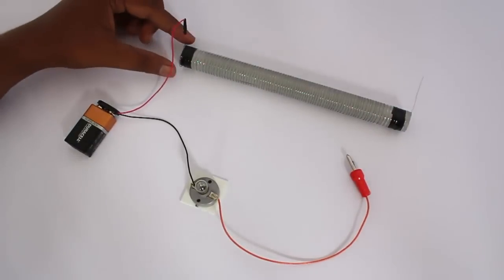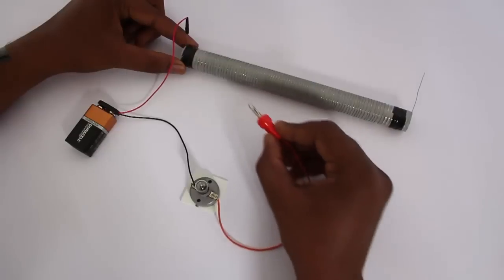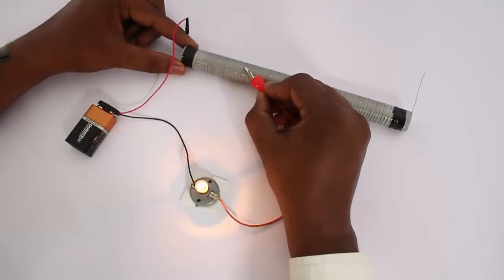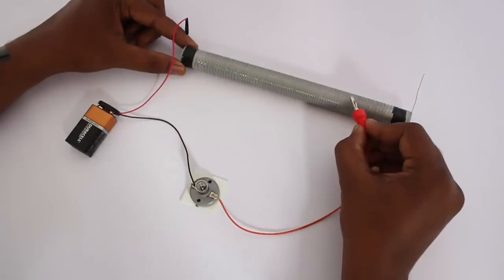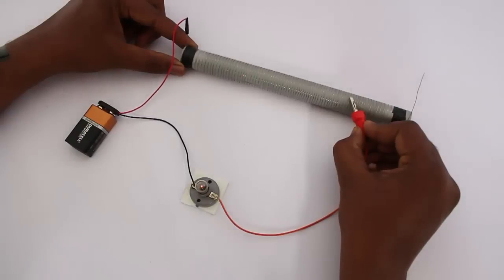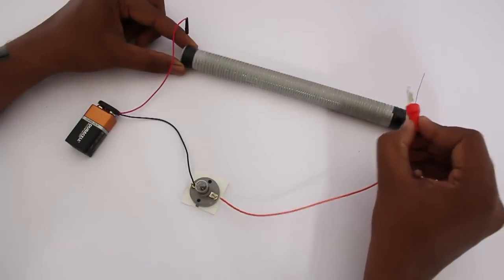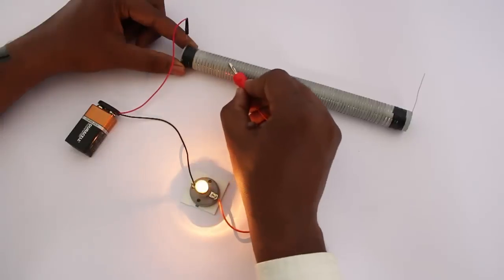And now when you take this unconnected wire and touch it close to the connected wire, you will see that the bulb glows brightly. And when you take it far away and touch it, the bulb either doesn't glow or glows very dimly.